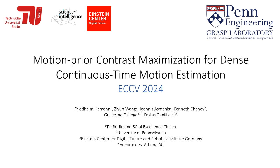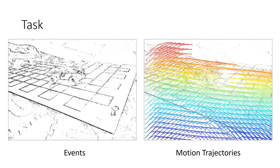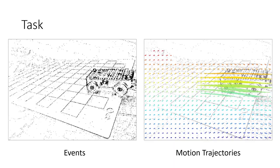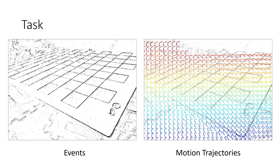We present our work Motion Prior Contrast Maximization for dense continuous time motion estimation. On the left you see the events in a small time interval, on the right you see the ground truth motion trajectory superimposed on the events.